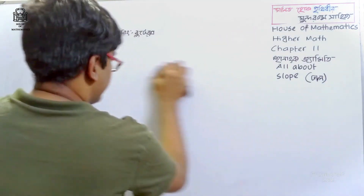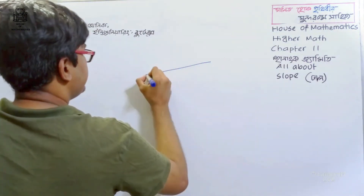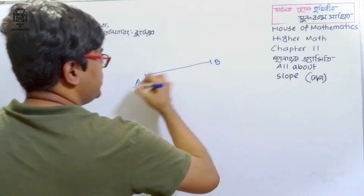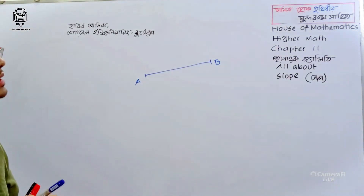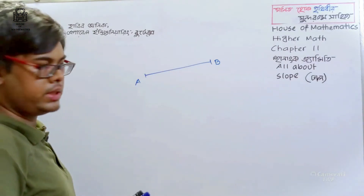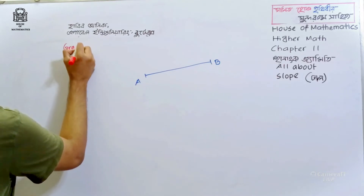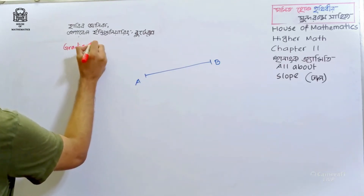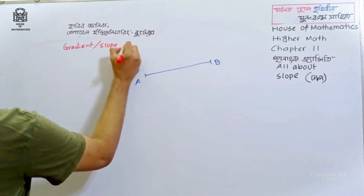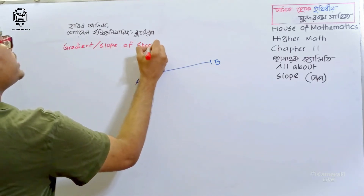The boundary would connect this path. This is straight line A and B. This is the boundary that would connect this. The line will be the same. Let's write the gradient or slope of straight lines.